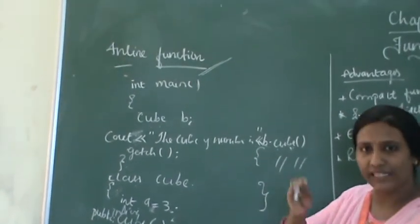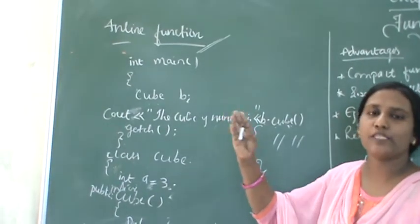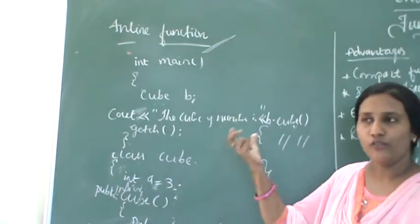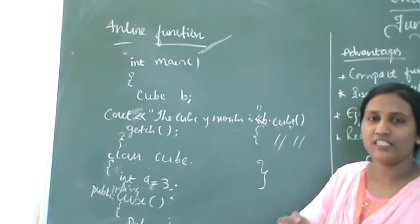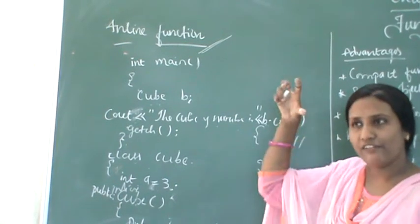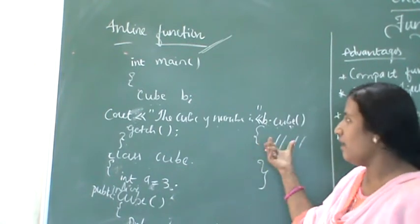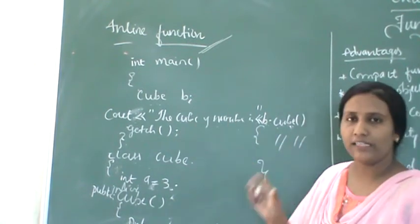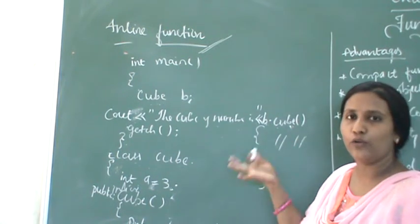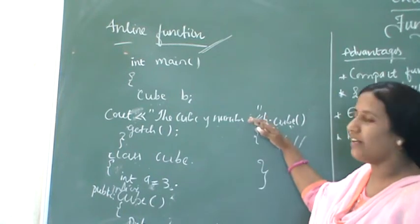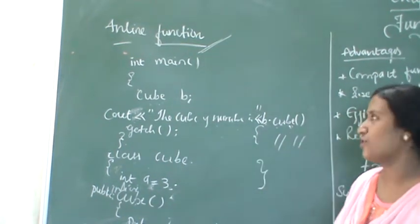When expanding, the function expands its code at the point where it is present. The calling function will not go directly to the function; instead, it will get the code, substitute it there itself, and find the result. We will get the answer at the same place, so there will be no difficulty, no complexity. The code will remain compact.